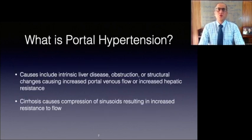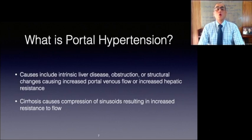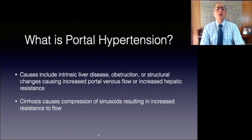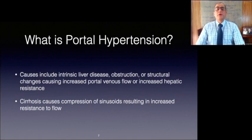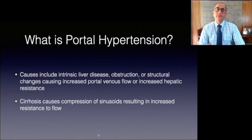Portal hypertension may be caused by intrinsic liver disease or structural changes that result in increased portal venous flow or increased hepatic resistance. Normally vascular channels are smooth, but liver cirrhosis can cause them to become irregular and tortuous with accompanying increased resistance to flow. This resistance causes increased pressure resulting in varices, or dilations of the veins and tributaries. Pressure within the portal system is dependent upon both inflow from blood flow in the portal vein and the hepatic resistance to outflow.